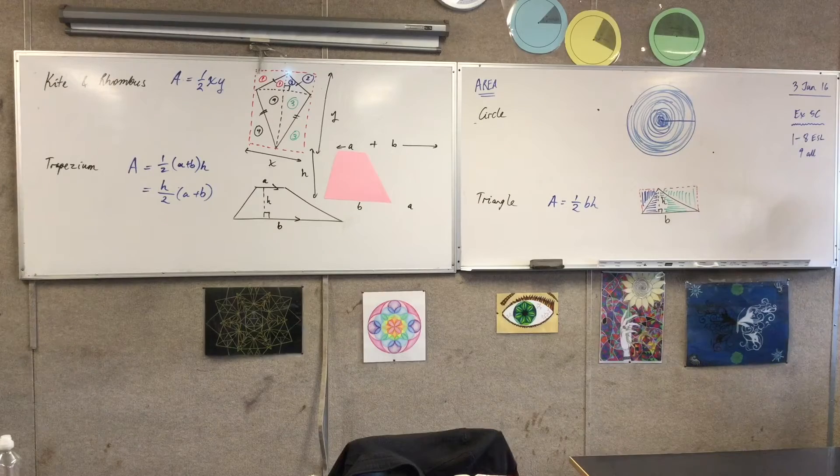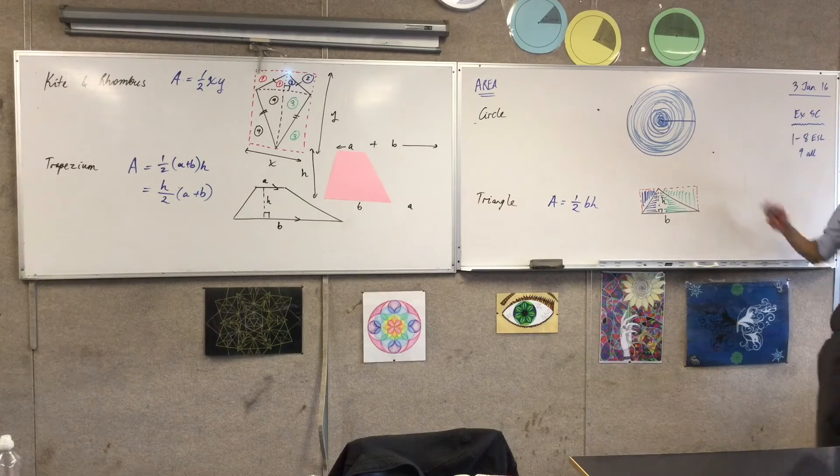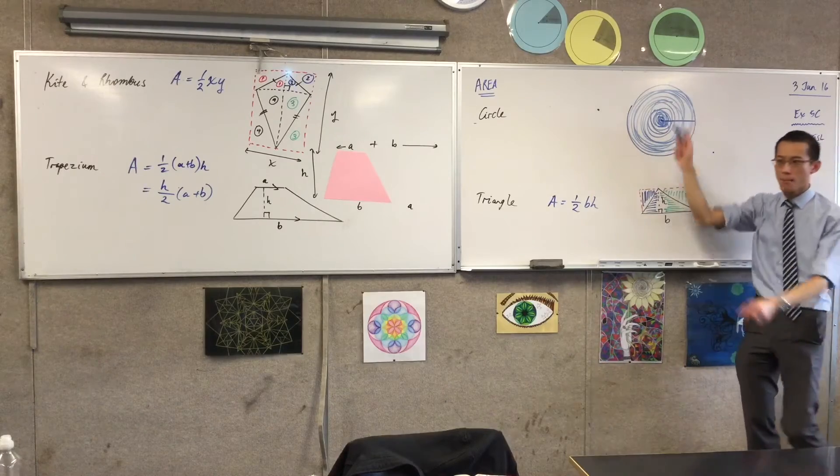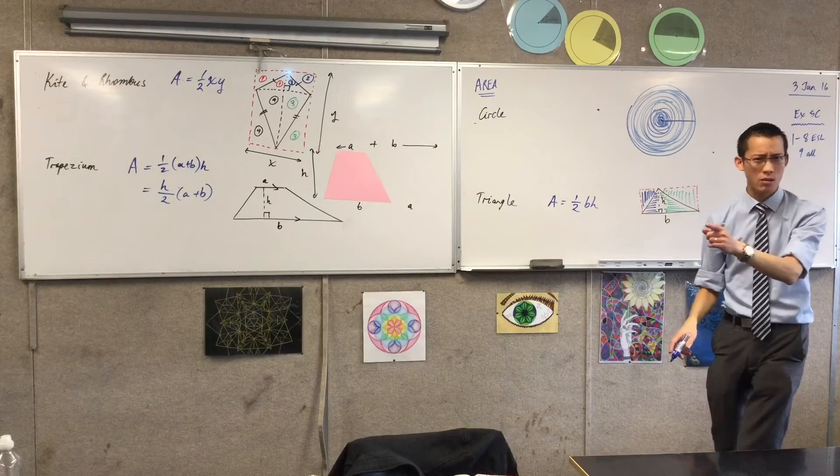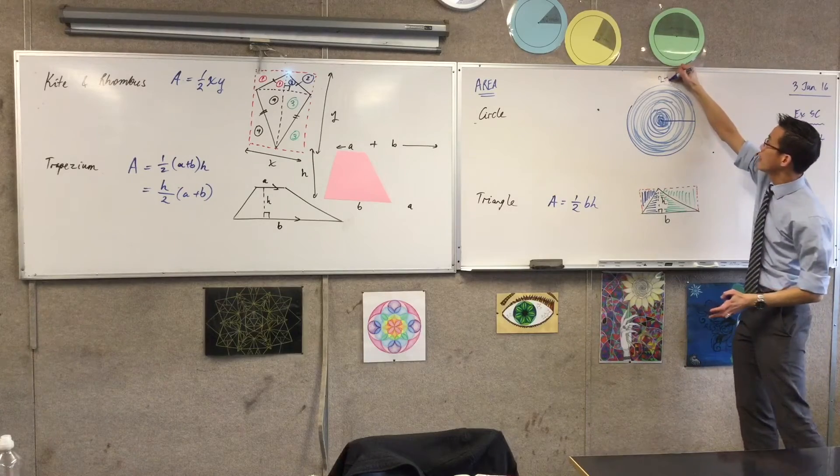What about the longest rope? What was the length of the longest rope in this circumference? It would be the whole thing around, do you agree with that? But we know how long the circumference is, right? What's the formula for circumference? It's 2πr, yeah?